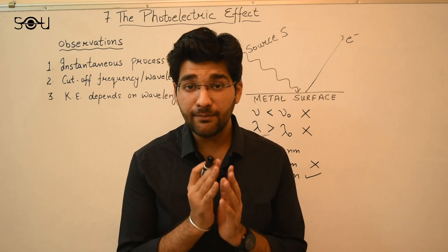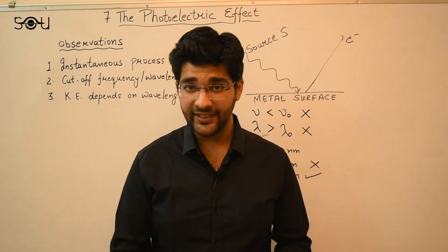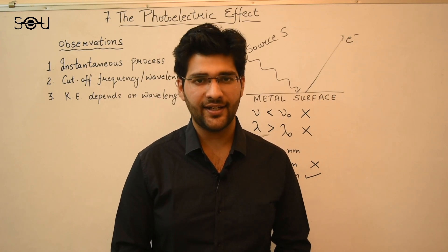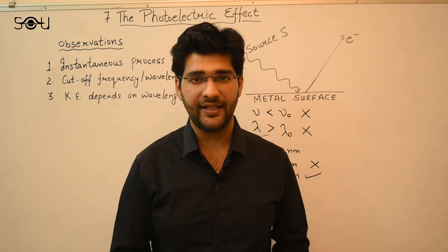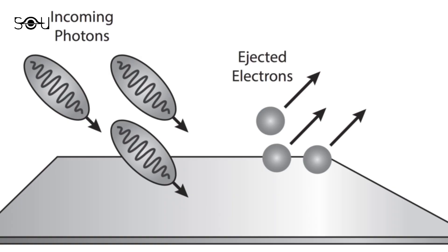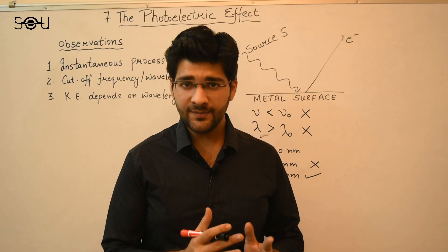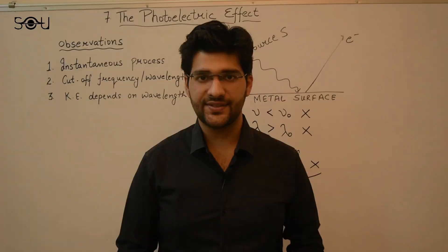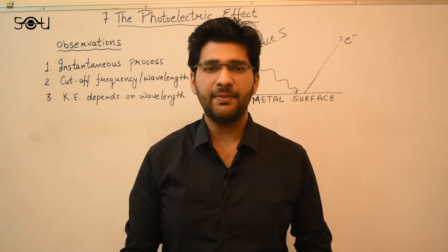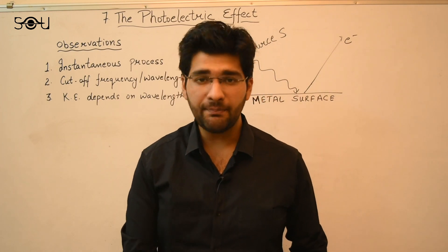By 1905, this had become a major challenge for physicists. It was finally solved by Albert Einstein in 1905, who was working in a patent office. Einstein's solution was to consider light as made up of particles — teeny tiny packets of energy, which he called a collection of discrete quanta. You could even count them: 1, 2, 3 and so on. Today, these packets of energy are known as photons. Notably, Einstein did not coin the term 'photons' — it was coined by American chemist Gilbert Lewis.